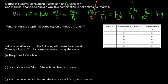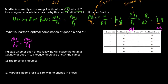The next question is: what is the optimal combination of goods X and Y for Martha? To find this we need to find the quantity at which MU_X / P_X = MU_Y / P_Y. The price of X is $4 and the price of Y is $2. For good X: the first unit's marginal utility is 16, divided by $4, gives 4 utils per dollar.